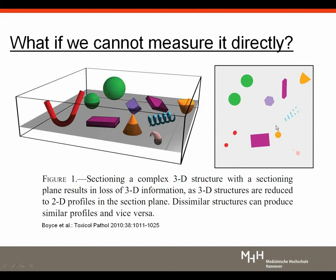This problem of three-dimensionality versus two-dimensionality is also very relevant in microscopy because what we are interested in when we do microscopy is usually three-dimensional objects. But what we have access to in microscopy is basically almost two-dimensional sections. This sectioning process significantly affects the available information both qualitatively and quantitatively. Different-sized spheres may appear as similar structures on a section depending on their position with respect to the sectioning plane, and similar structures can also produce dissimilar profiles.